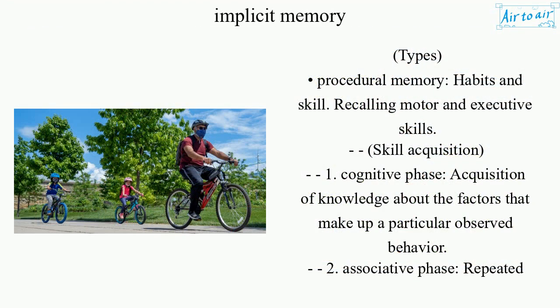Types. Procedural memory involves habits and skills, specifically recalling motor and executive skills. Skill acquisition refers to the process by which these procedural skills are learned and developed.